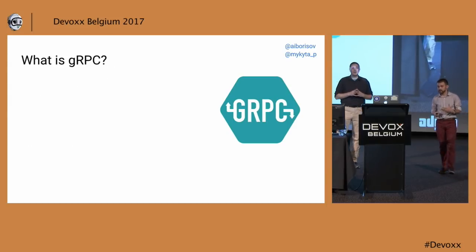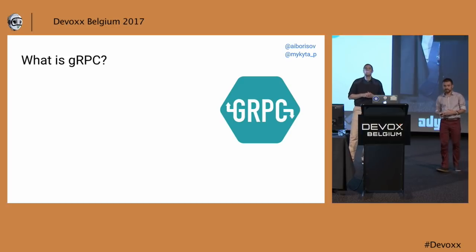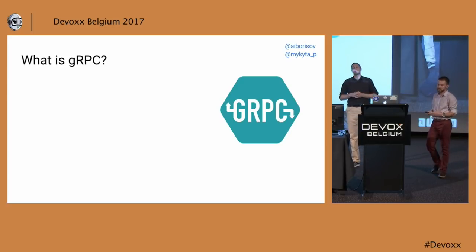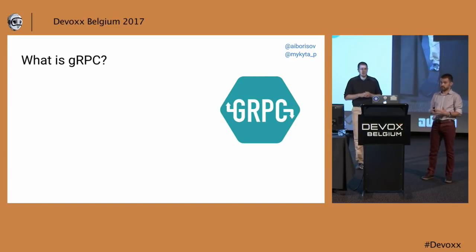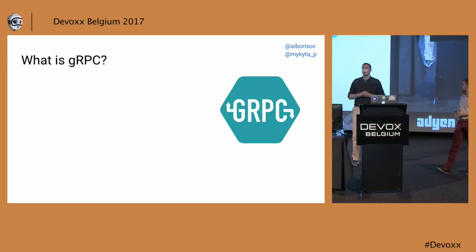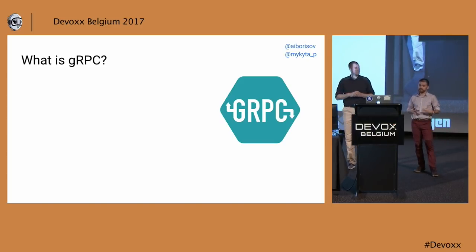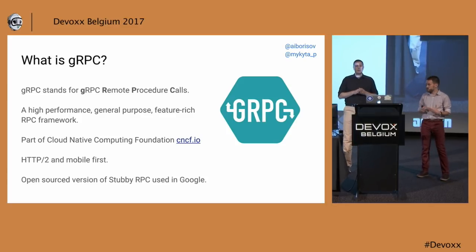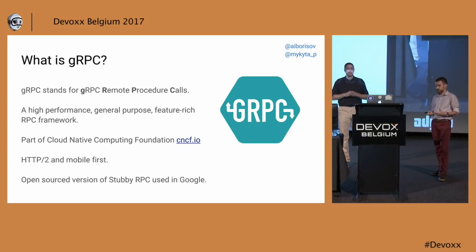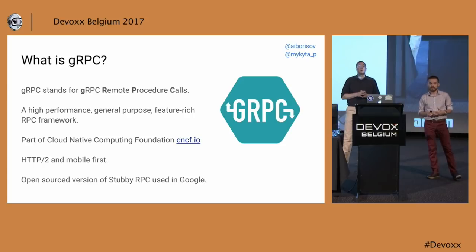gRPC is not REST either, so let's see what it is. Google started to adopt microservices a long time ago, probably even before this word was invented. In microservice world, every client call results in hundreds of remote network calls. To make inter-process communication efficient, Google developed a framework for remote procedure calls called Stubby. Stubby was used inside Google for many years through multiple generations. Finally, in 2015, Google released the open-source version of Stubby, which is called gRPC — an RPC framework originally developed by Google, now part of the Cloud Native Computing Foundation. It uses HTTP/2 as a transfer protocol and is built with all the modern requirements of distributed systems in mind.